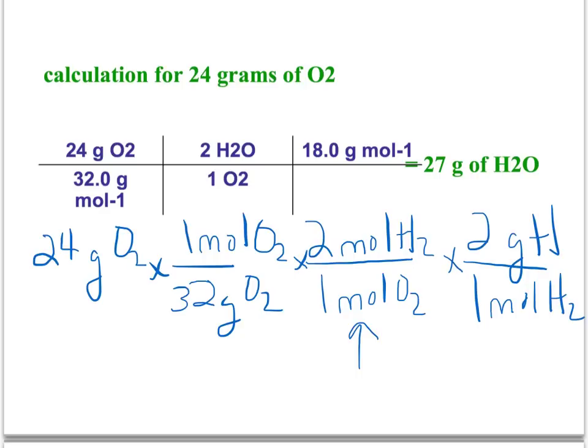Now notice when we do this, what's nice about this is things cancel out very well for us. So we can go through and cancel out grams of hydrogen, moles of oxygen, moles of hydrogen. Then our final answer is going to be the 27 grams of water. This is simply a review from yesterday, but hopefully you remember it.